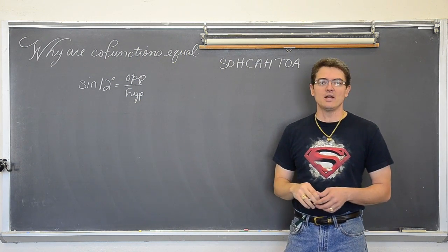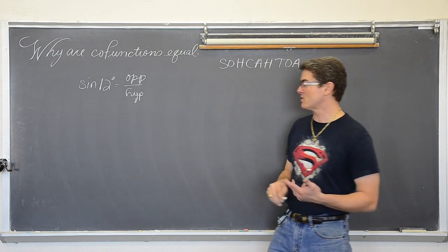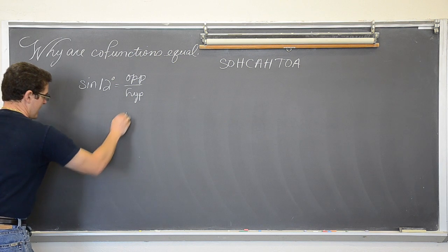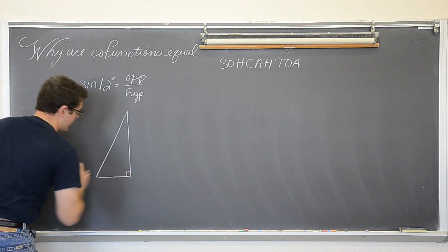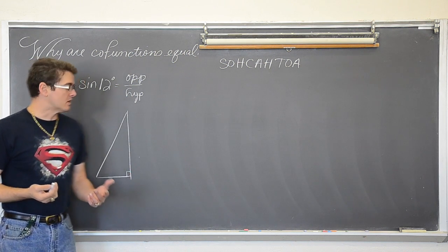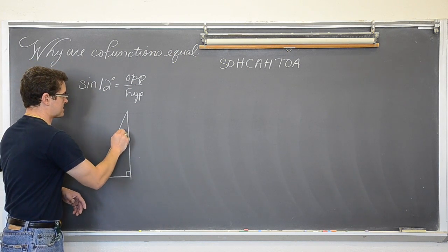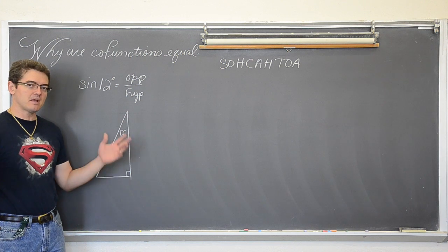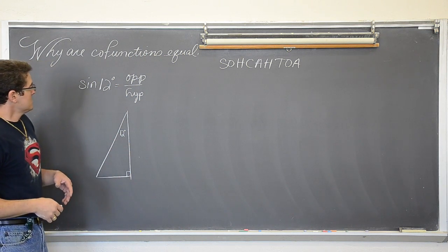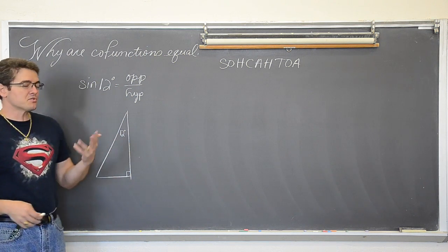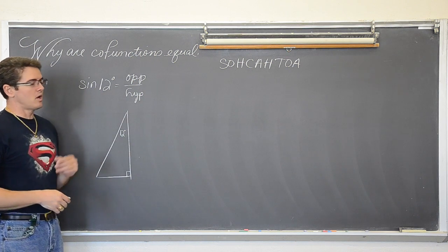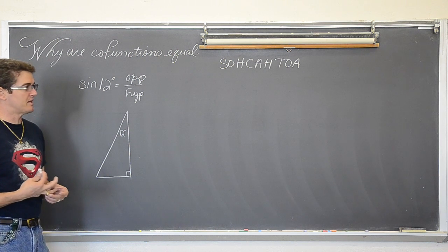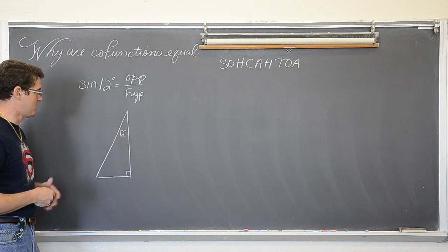Now again, I am not going to do y over r because these are not standard position angles. I am just going to draw a triangle just on the board somewhere. So I am going to go back to SOHCAHTOA. And so the sine of an angle measure is equal to opposite over hypotenuse. So we must have a triangle that has a right angle of course, because it is a right triangle, and it must have an angle of 12 degrees somewhere.